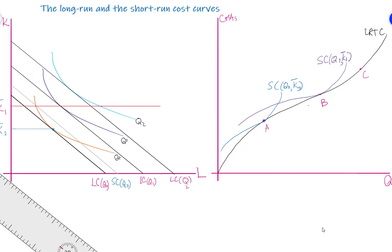Finally, what if the firm wants to produce Q2 output in the short run? Again, capital is fixed at K1-bar. Because of this constraint, the firm is unable to produce at the point of tangency that holds for the long-run equilibrium, so the short-run costs are higher than the long-run cost. The equilibrium takes place at point C, where the long-run total cost and the short-run total cost touch each other. From this analysis, the long-run total cost curve is the lower envelope of the short-run total cost curves.